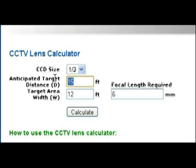Let's try another distance. Let's try 45 feet. And how about a 30 foot target area width? It says a 7.2 millimeter lens is required. You could go with a 6 millimeter lens on that. If you want to find out what a 6 millimeter lens will give you, you can just plug in different numbers here until this reads 6 millimeters.